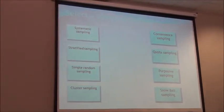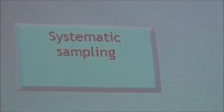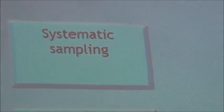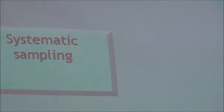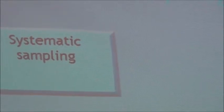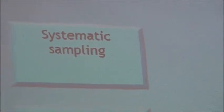Systematic sampling means you take the population and number them — let's say from 1 to 100. If you need 5 elements from the population for the sample, you divide 100 by 5, which means you take number 5, number 20, number 40, number 60, number 80, and number 100. So you're systematically walking through the data and choosing every 20th element.